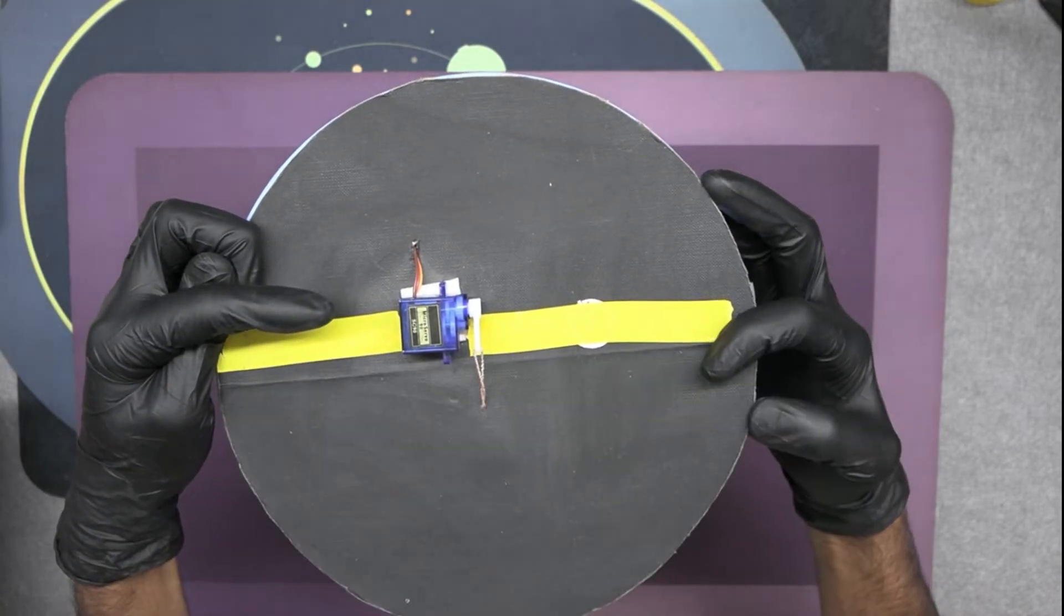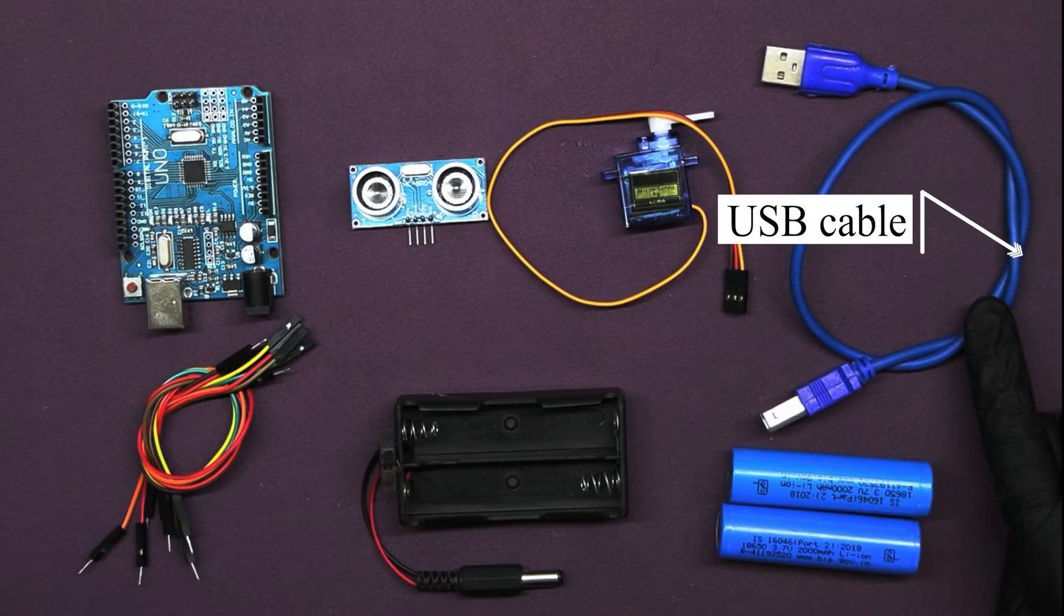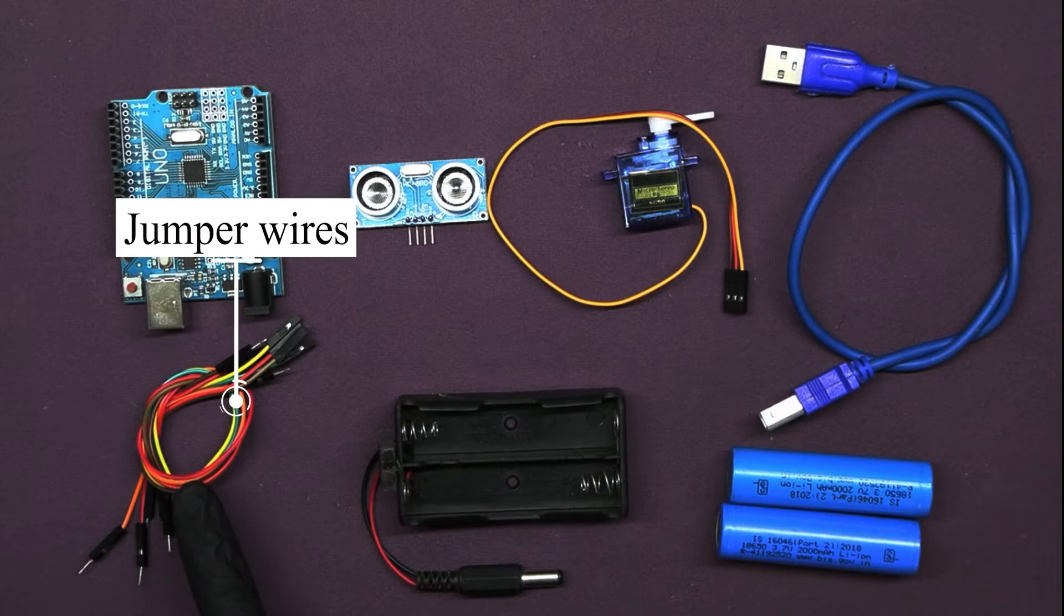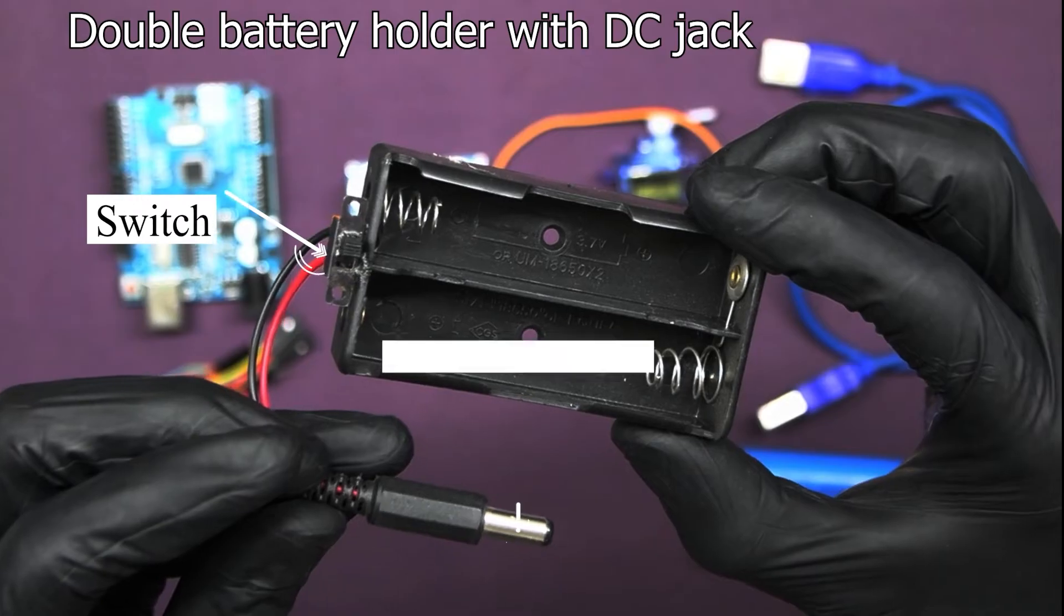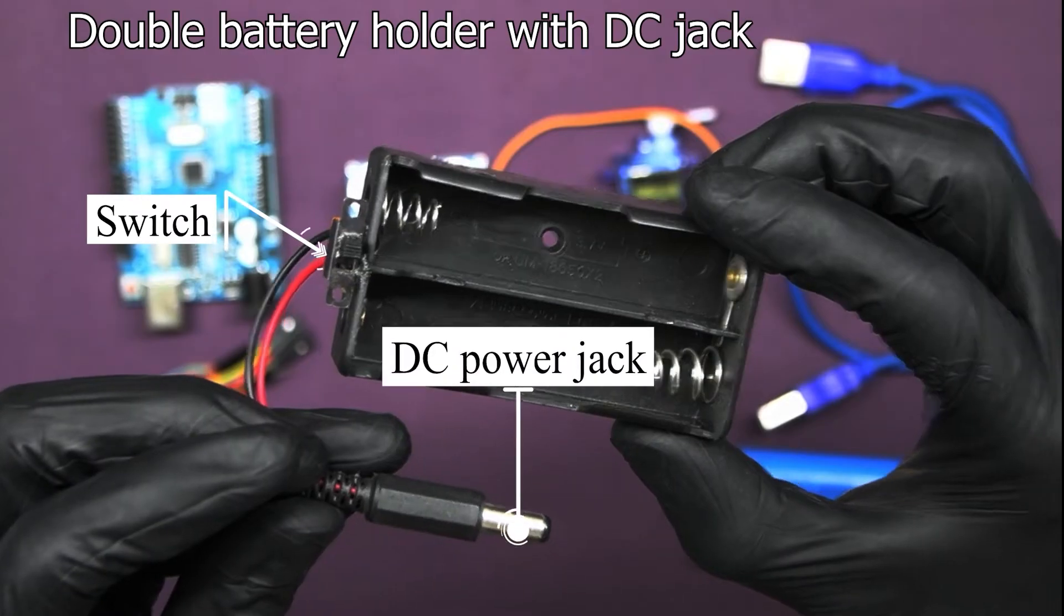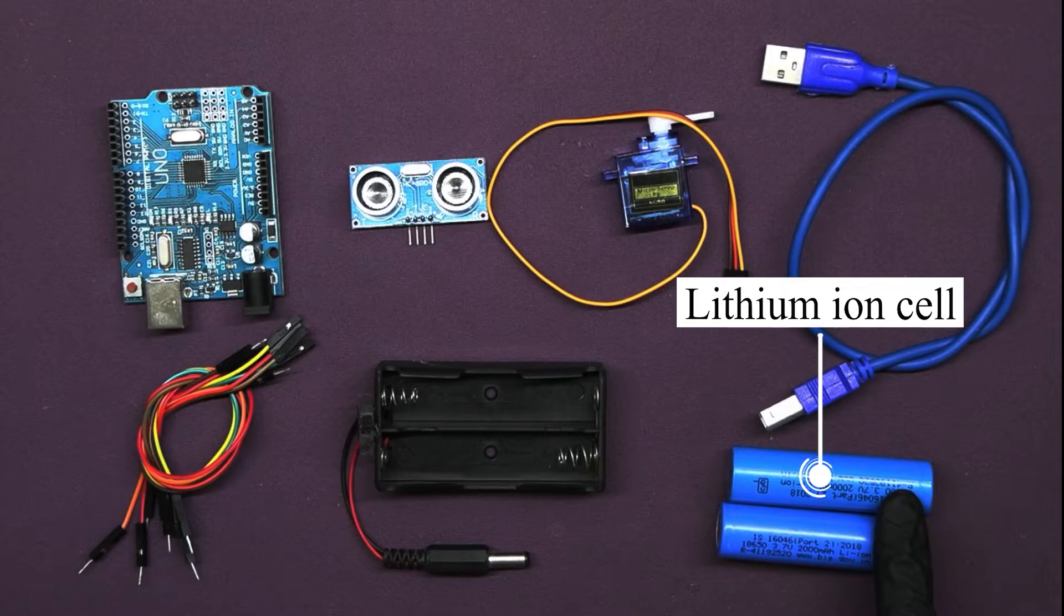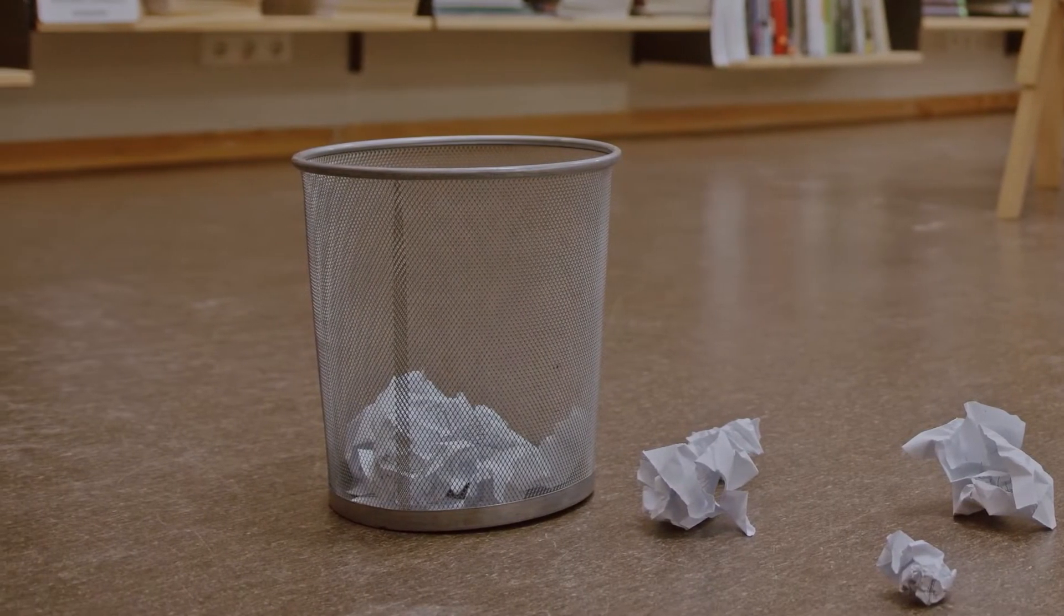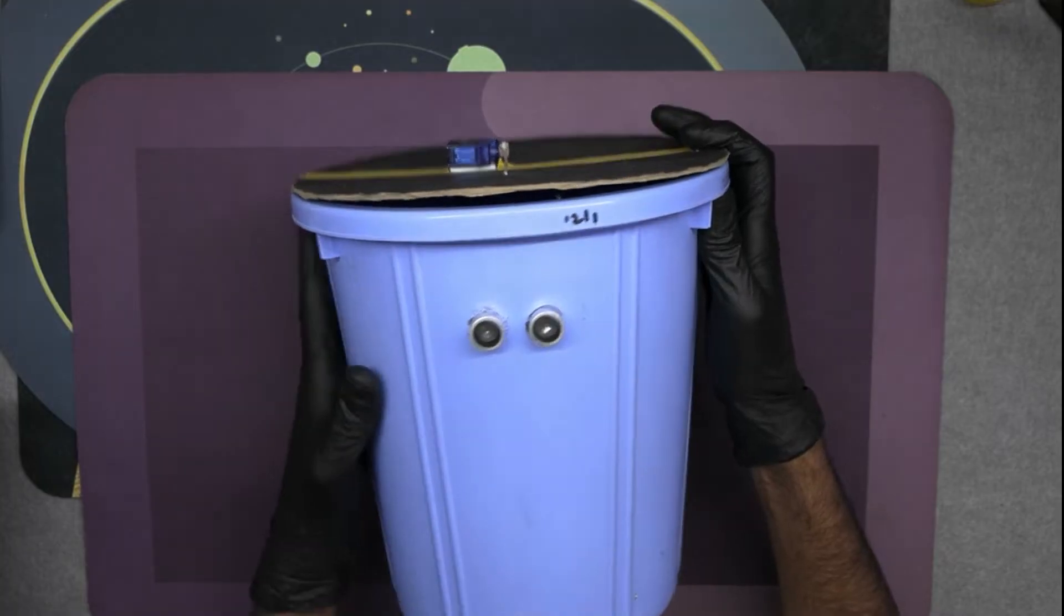Then one USB cable to upload code to our Arduino board, some jumper wires, a double battery holder with a DC power jack and switch, and two lithium ion cells. At last, a standard dustbin that will be our canvas for transforming into a smart device.